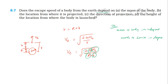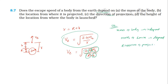In the formula, escape velocity depends on the mass of the earth — so mass of the earth is dependent. As for the direction of projection, the angle of projection does not appear in the formula. If the body has sufficient velocity to escape, it will escape regardless of direction. So direction of projection is independent.